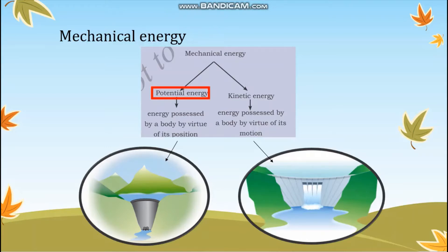An example for potential energy will help you understand better. As you can see here, there is a dam and it consists of water, and the gates of the dam are closed. Because of the water that is stored in the dam, the dam now possesses potential energy — that is, energy possessed by a body by the virtue of its position.